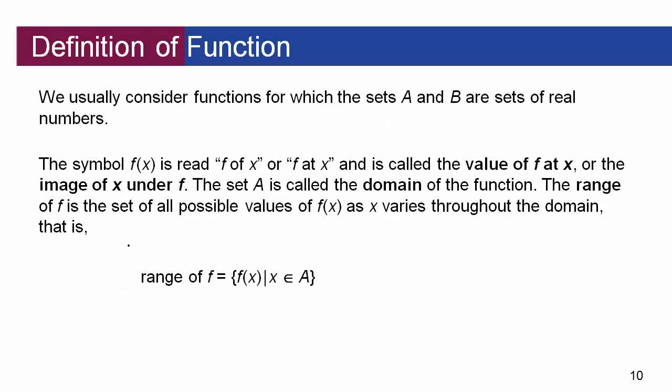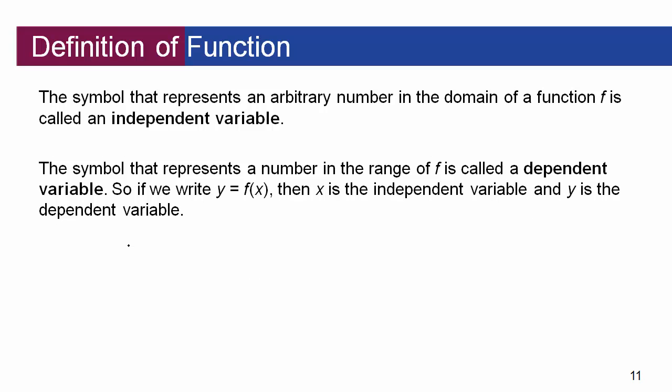We normally think of functions in terms of their inputs and outputs, and we think of those as sets A and B. When we see f of x, we read it just like that — f of x. The domain is everything that can be put into the function, and the range is everything that comes out of the function. We also talk about these as independent and dependent variables, where the independent variable is x — the stuff going in — and the dependent variable is what comes out, because it depends on what you put in.